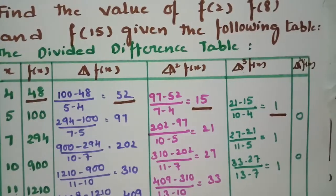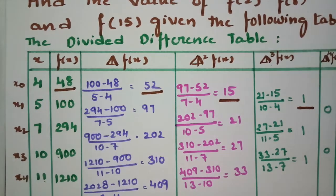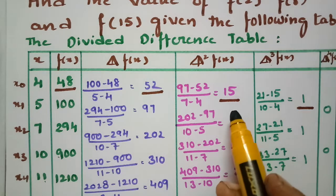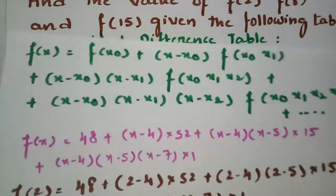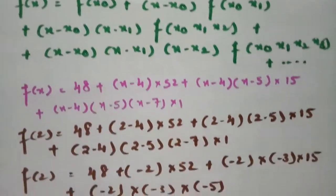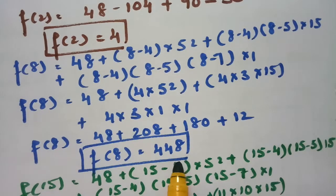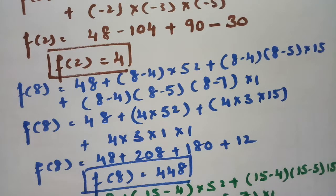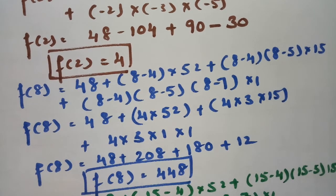This is how we frame the divided difference table, labeling x₀, x₁, x₂, x₃ and so on, with f(x₀), first divided difference, second divided difference, third divided difference. Using Newton's divided difference formula, we got f(2) = 4, f(8) = 448, and f(15) = 3150. Thank you so much for watching — please practice and pass it on!